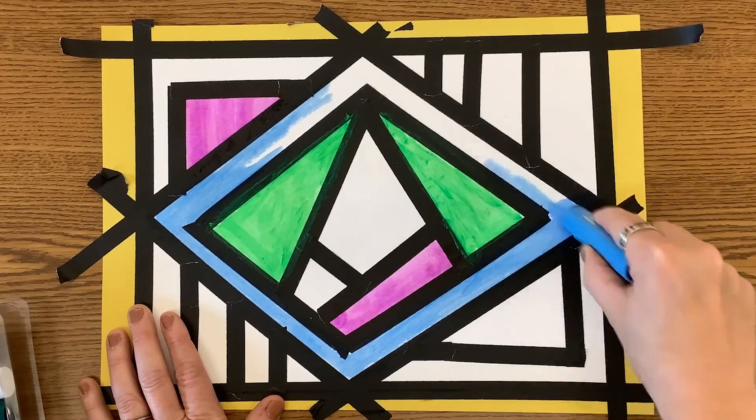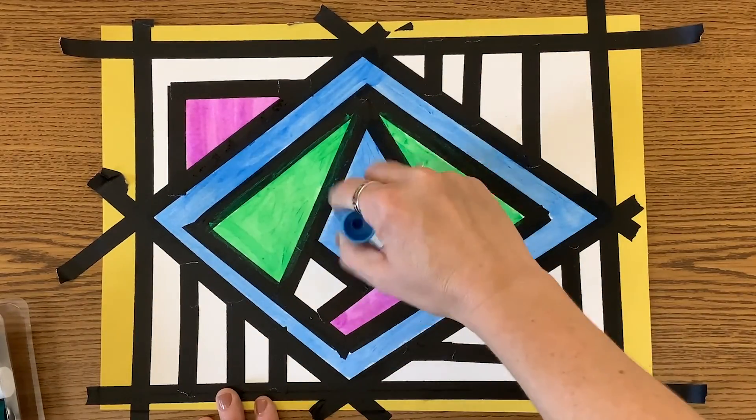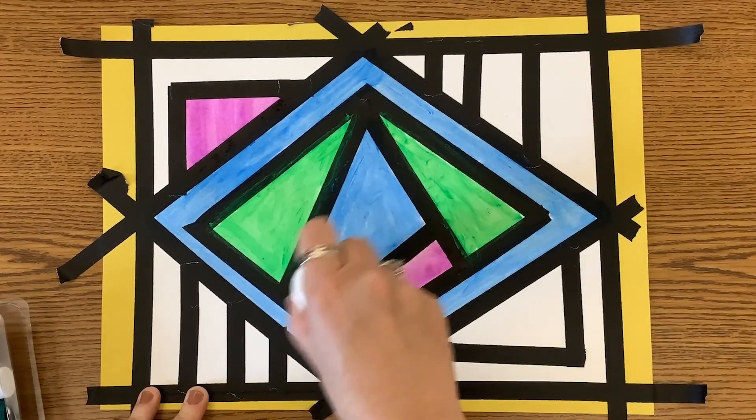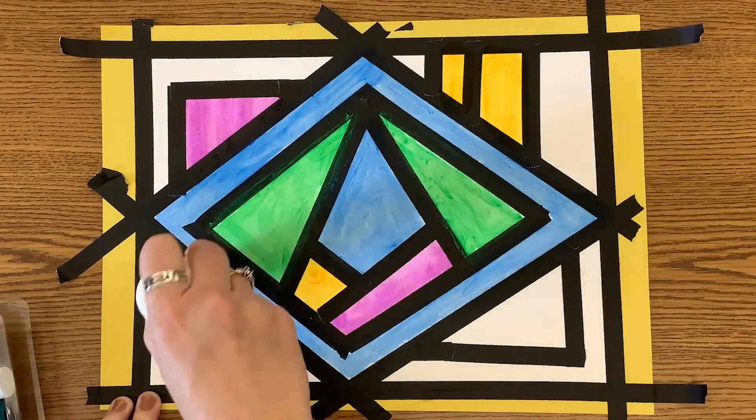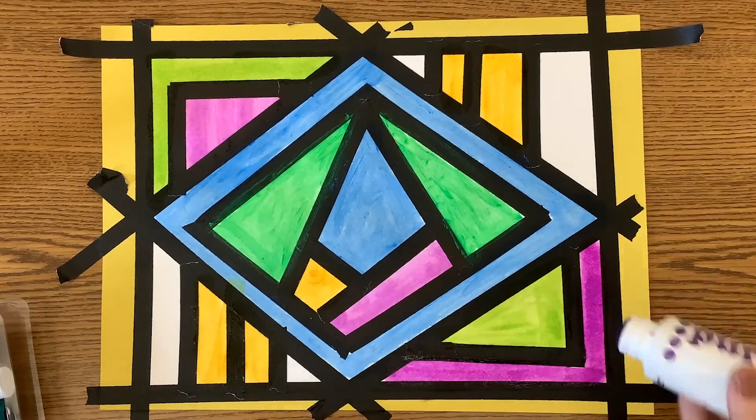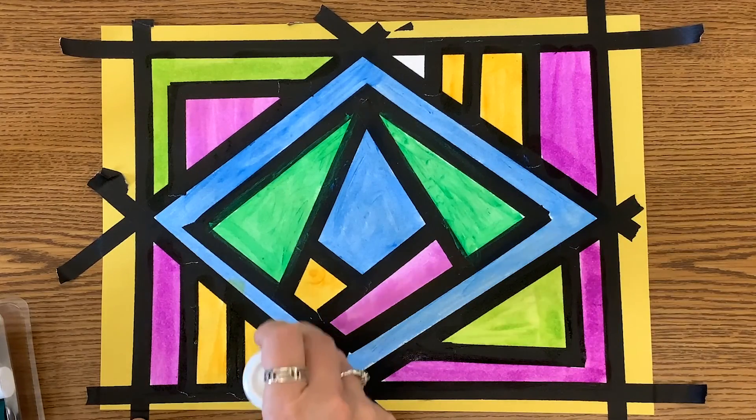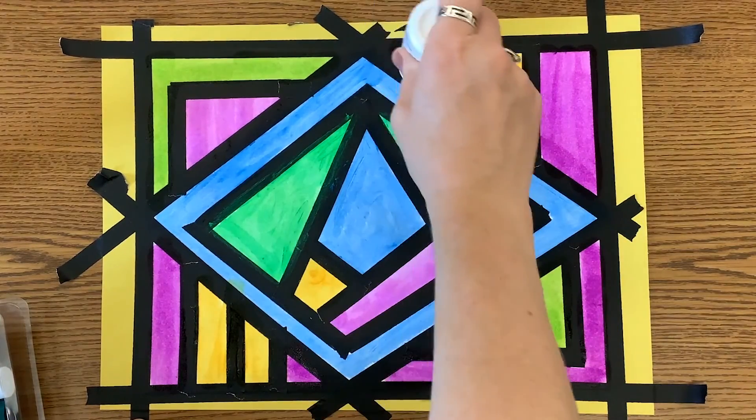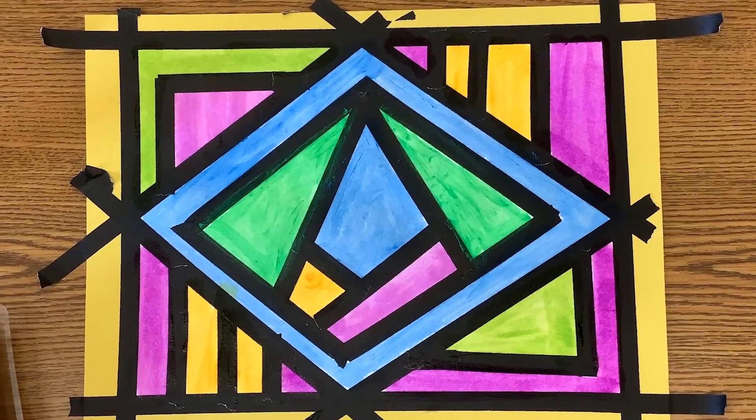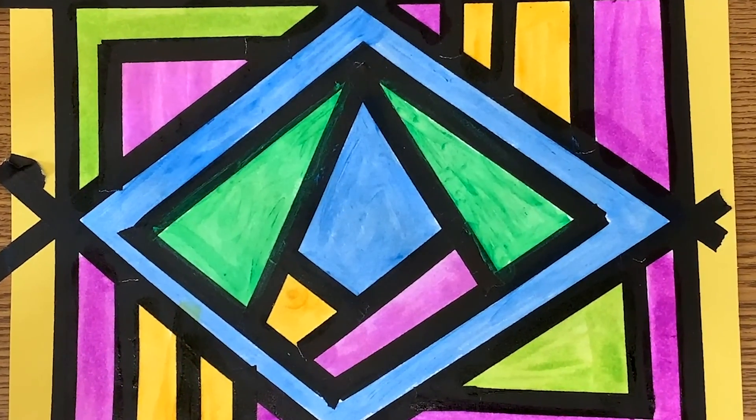Once your artwork is filled with color, you are done with step two of your Ndebele tribe house painting. You can move on to step three, which is tracing and removing the tape. See you then.